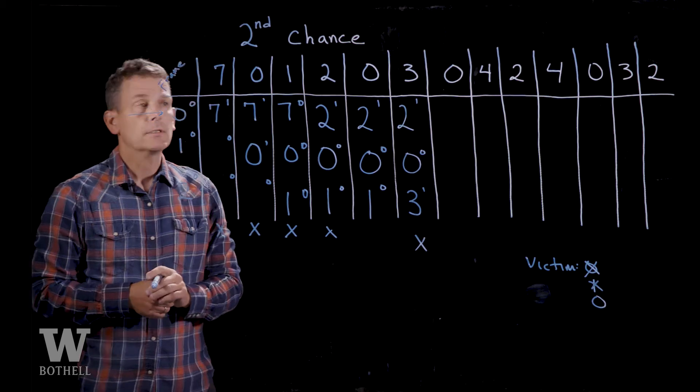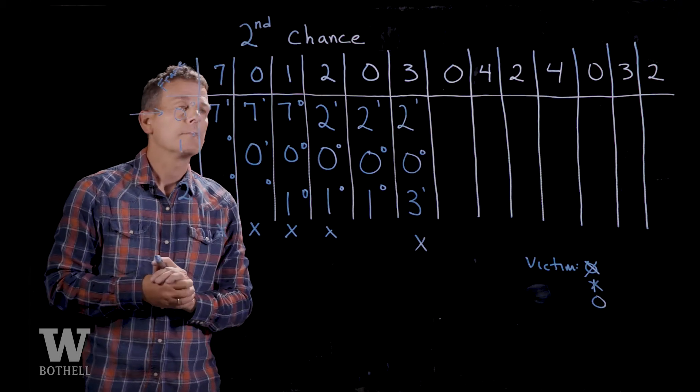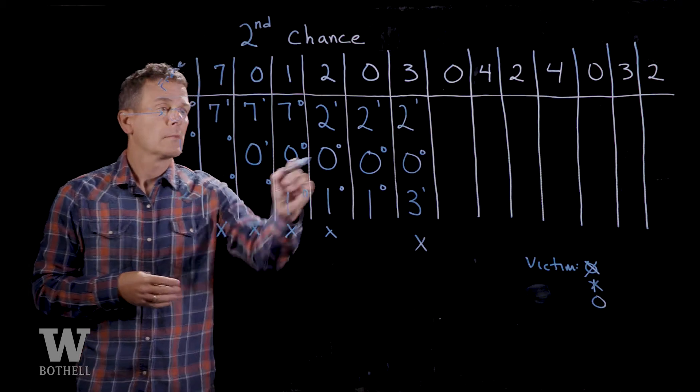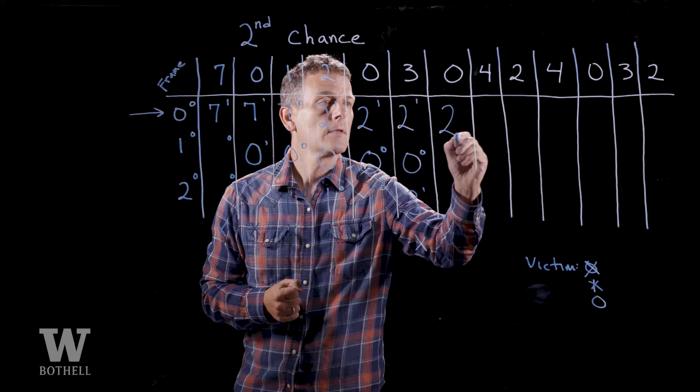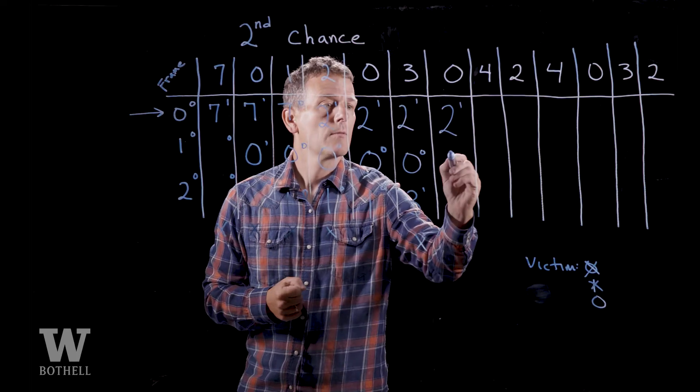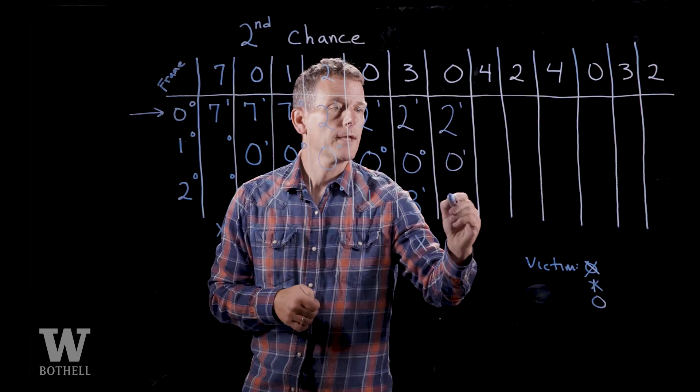Virtual page zero — it looks like zero is referenced quite frequently. It's in memory, so our reference bit goes to one for that.